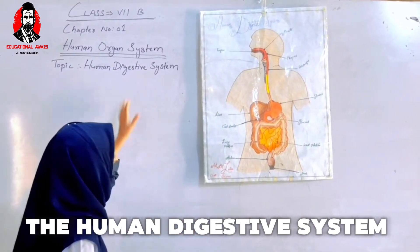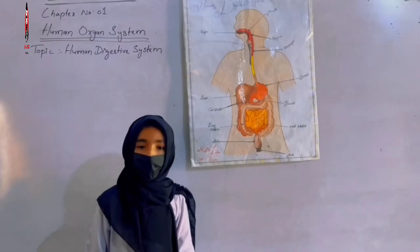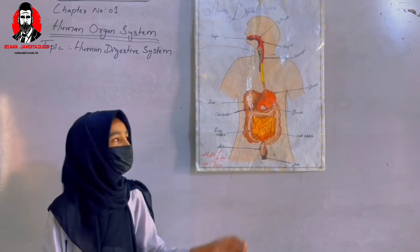The digestion system starts with our mouth. What is the first part of the digestion system? The large food particles are converted in the mouth. The big parts of our food are converted using the digestion system.